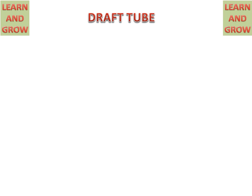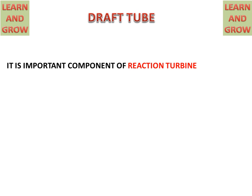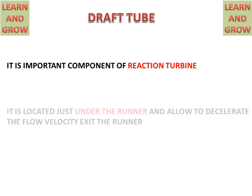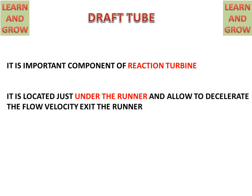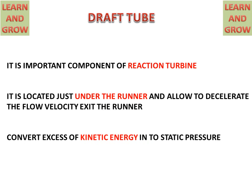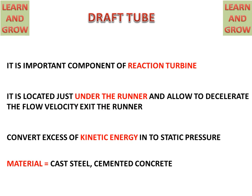Today we will discuss about draft tube and its types. A draft tube is an important component of a reaction turbine. It is located under the runner and allows the flow velocity exiting from the runner to decelerate. It converts excess kinetic energy into static pressure. The material used for the draft tube is cast steel or cemented concrete.